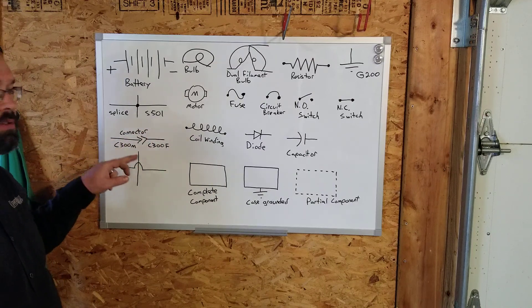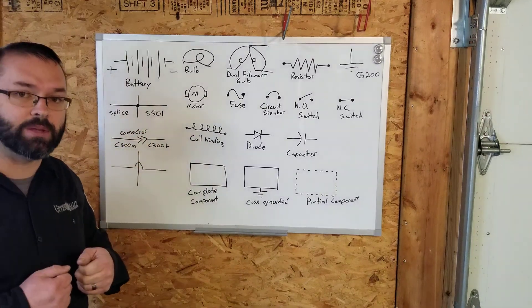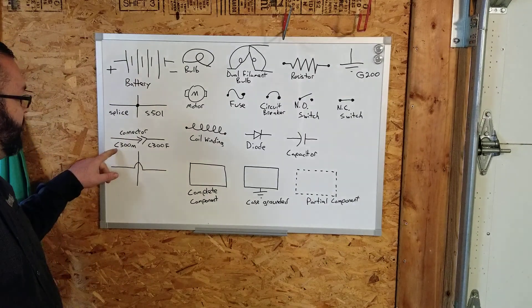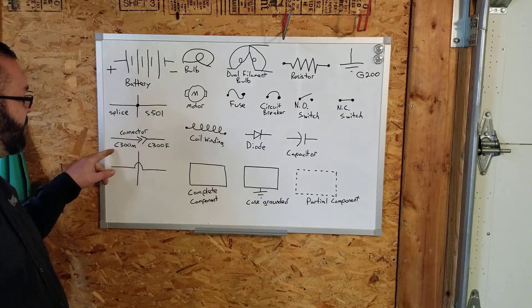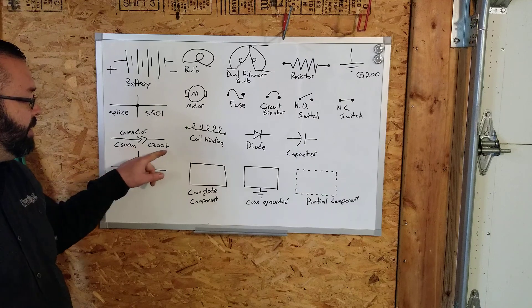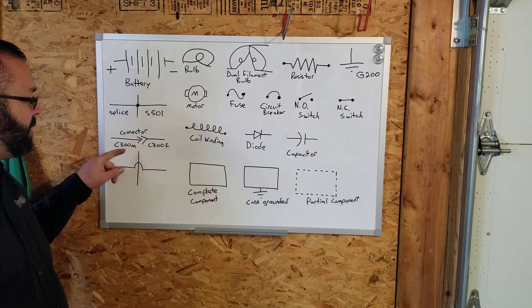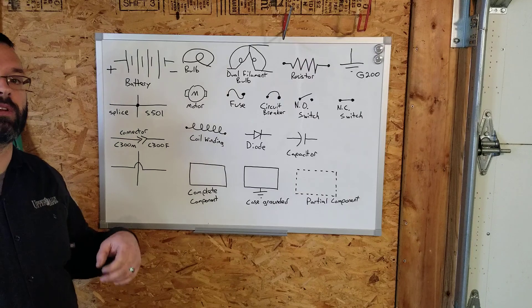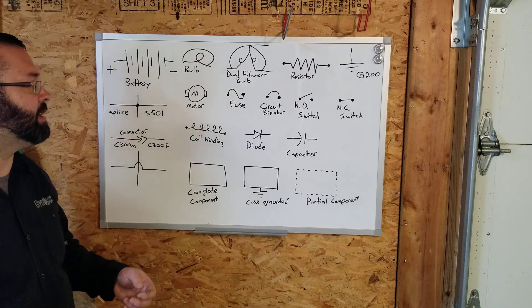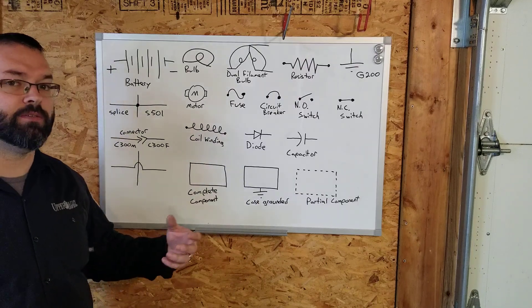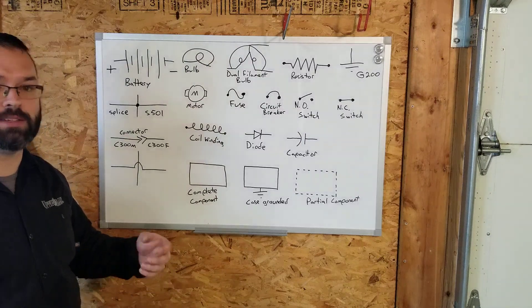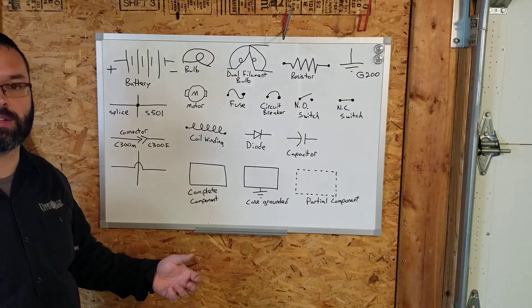We also have connectors. If we have a connector that plugs together, something snapped together, they'll indicate that with a C. This connector is C300, and the M and F mean male part of the connector and female part of the connector. If you're going through a diagram or an ASE test and it asks you what is S500, well, you know S is a splice, so it's splice number 500.